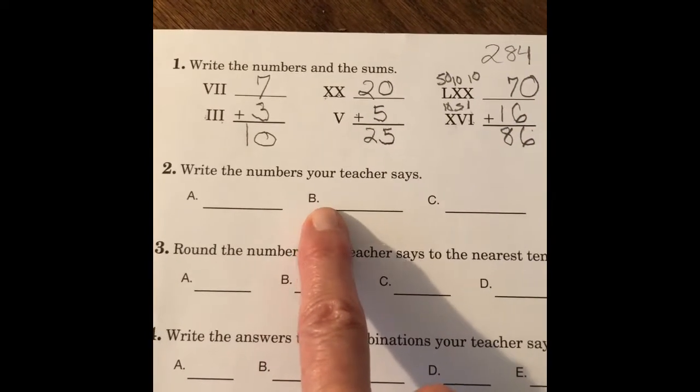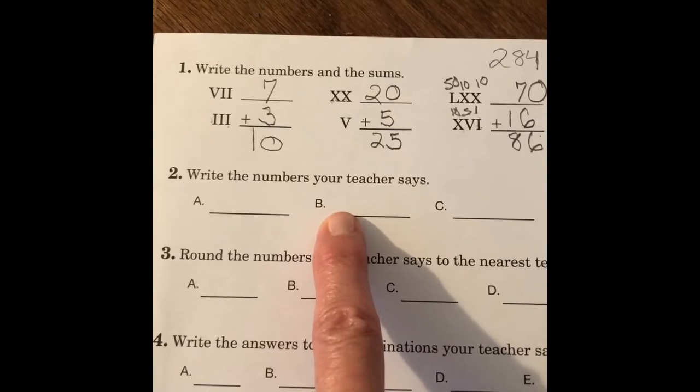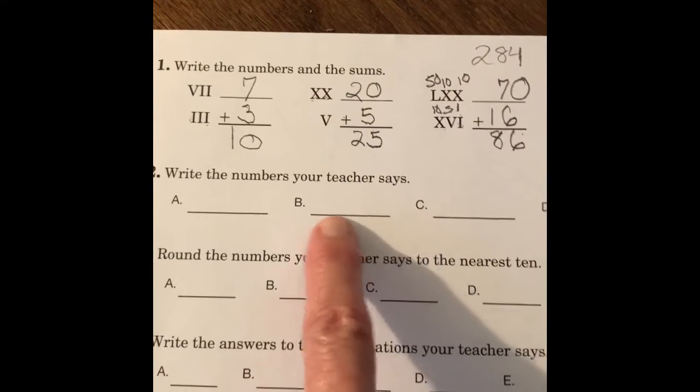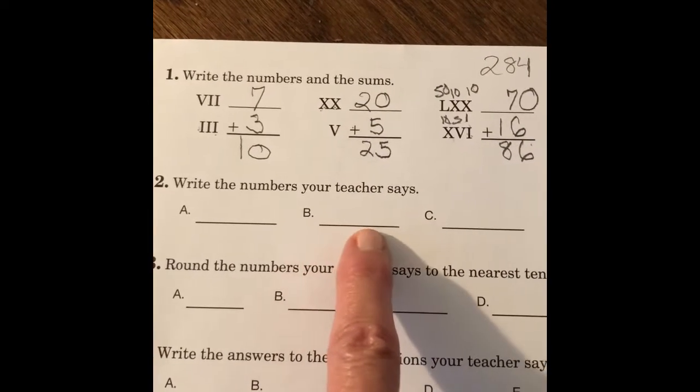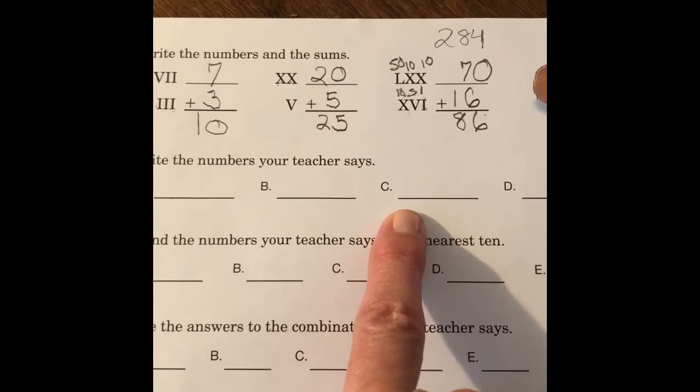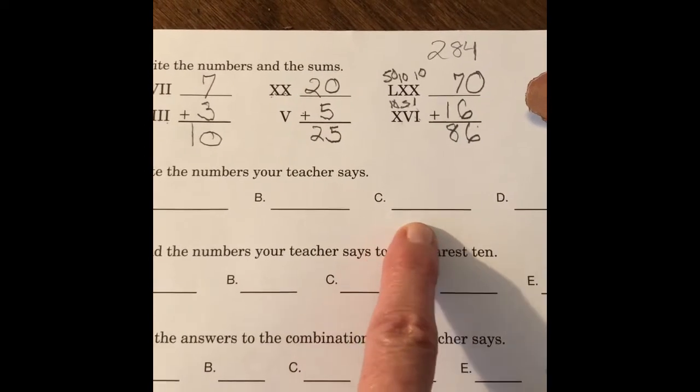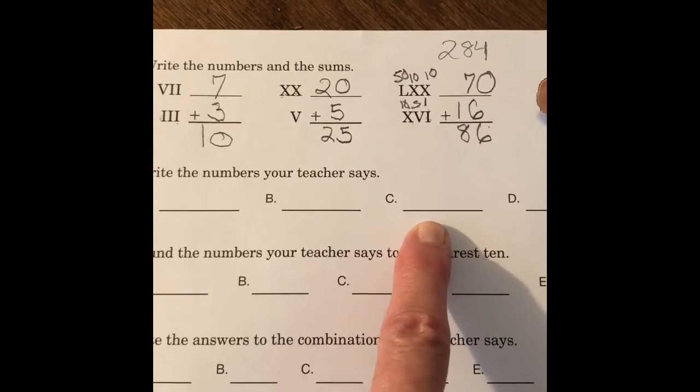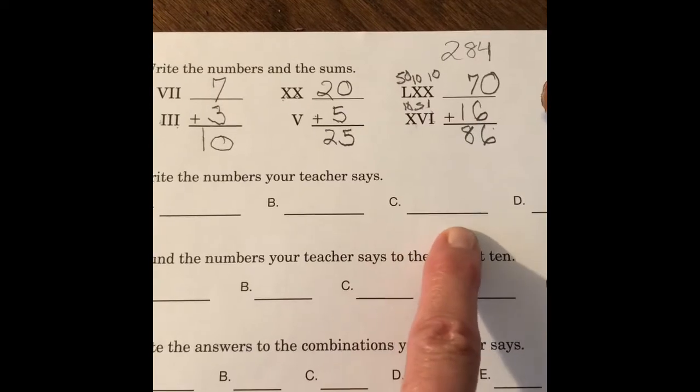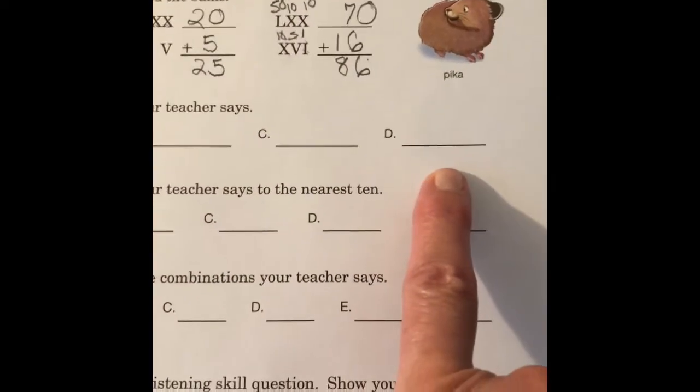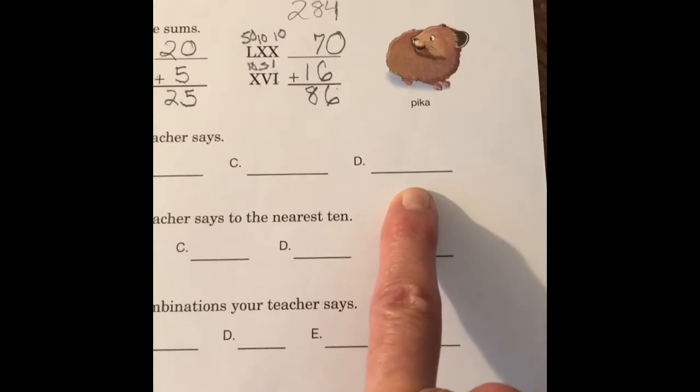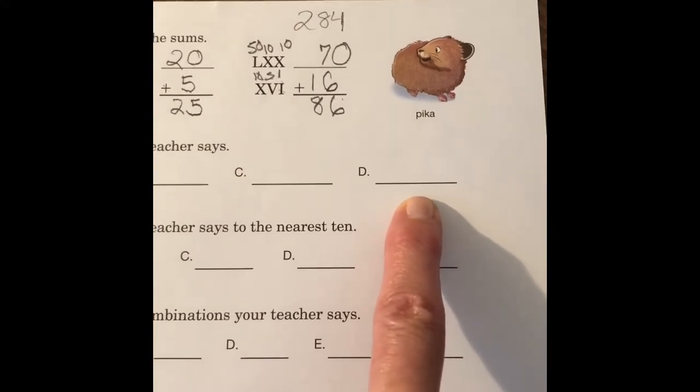B, write the number 904 and 7 cents. 904 and 7 cents. C, write the number 52,030, 52,030. D, write the number 5,006, 5,006.